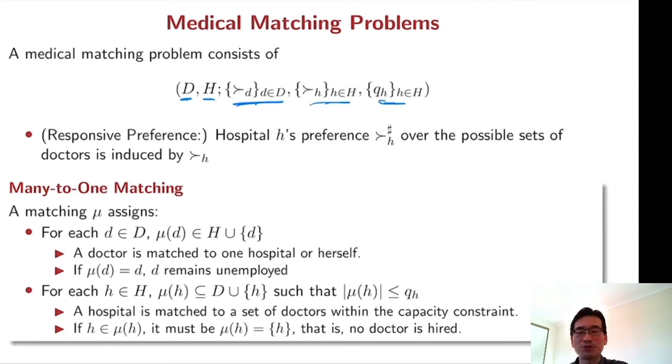A matching mu assigns for each doctor one hospital or herself, which means remaining unemployed. And for each hospital, the matching mu assigns a set of doctors within the capacity constraint. If the set of doctors includes the hospital itself, then the hospital is not going to hire any doctor.